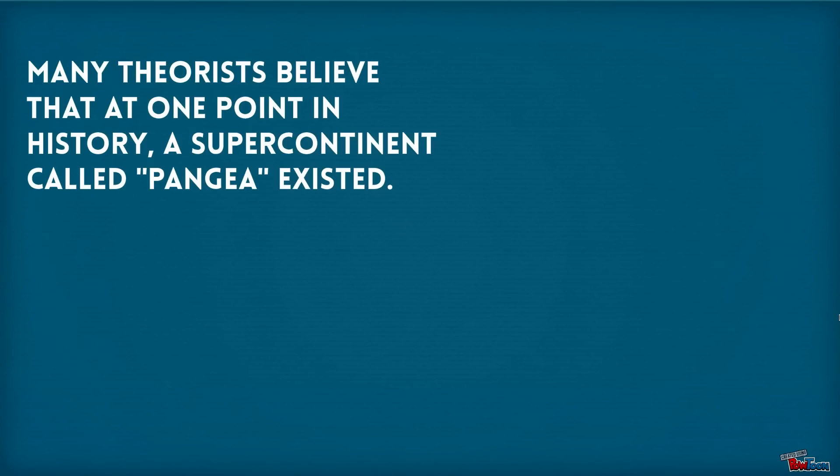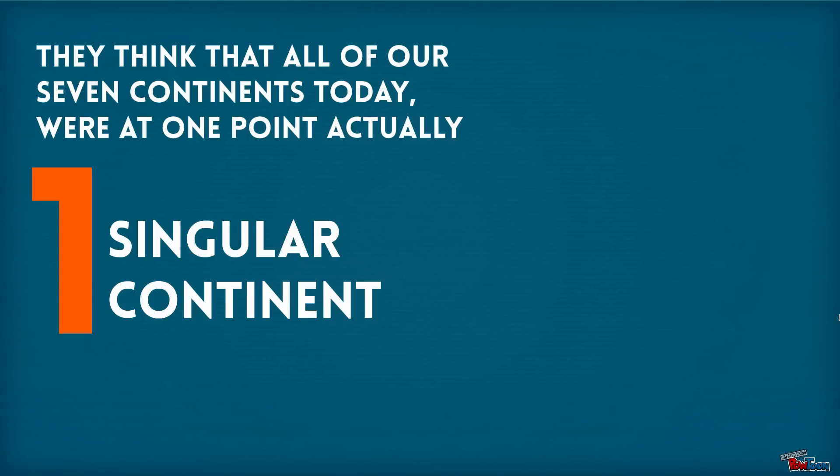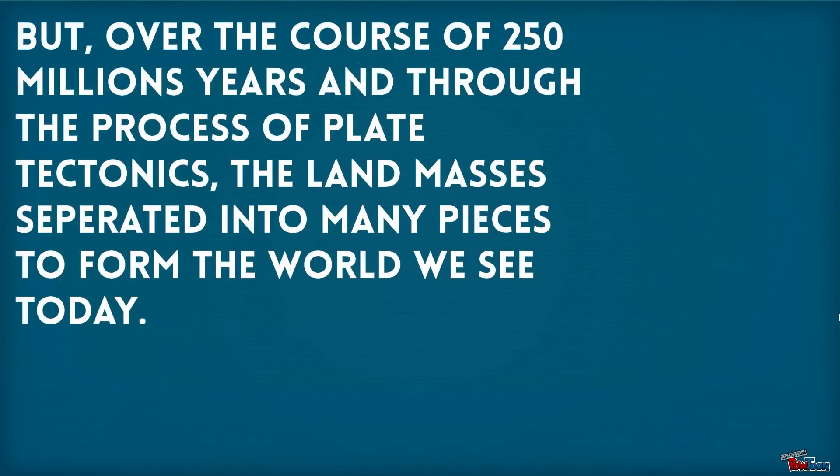Many theorists believe that at one point in history, a supercontinent called Pangaea existed. They think that all of our seven continents today were actually at one point a singular continent. But over the course of 250 million years and through the process of plate tectonics, the land masses separated into many pieces to form the world we see today.